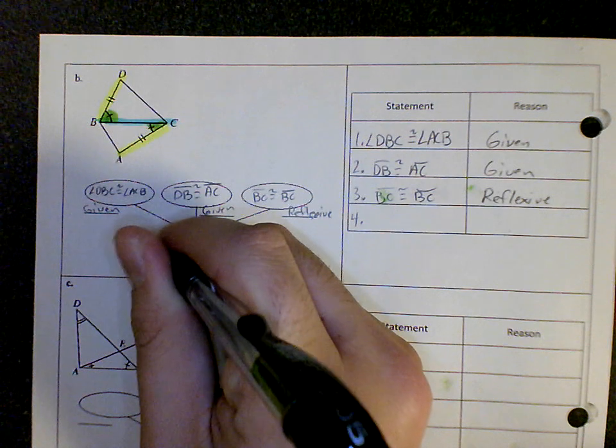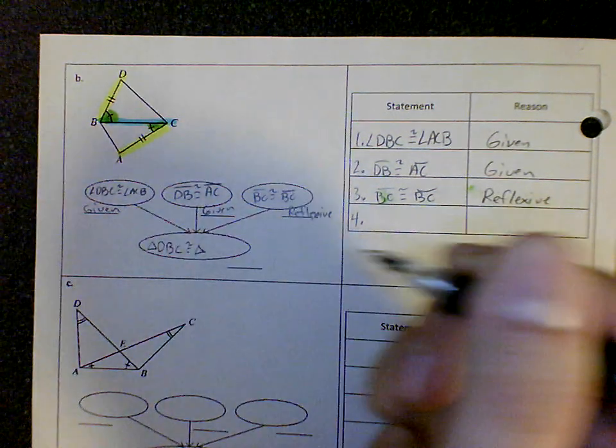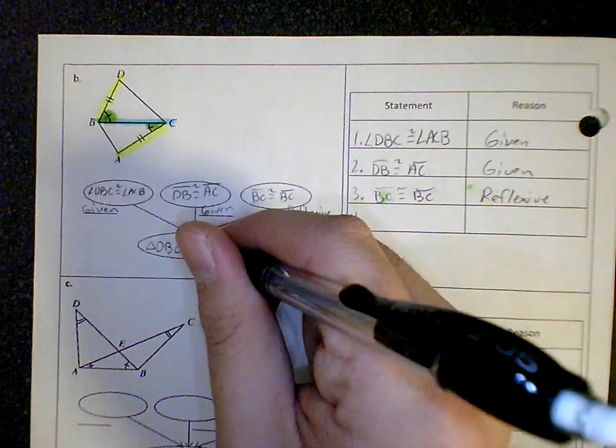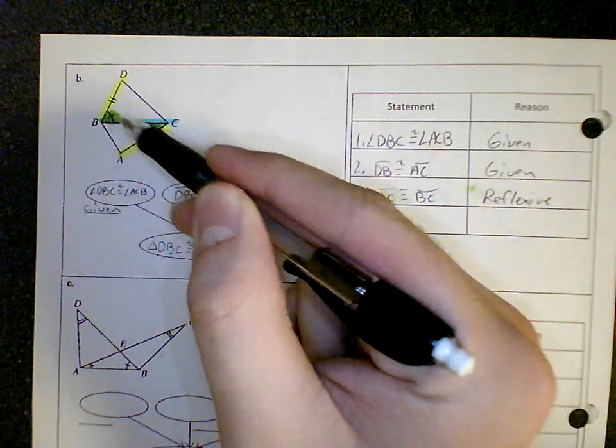So then my fourth step can be that the two triangles are congruent. So triangle DBC is congruent to triangle ACB. And that's going to be side, angle, side.